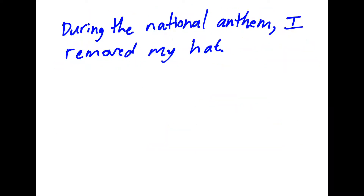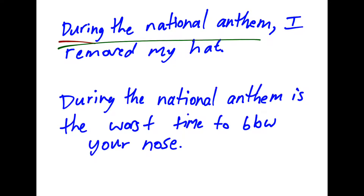In a sentence like 'During the national anthem, I removed my hat,' we see the preposition 'during,' the object 'anthem,' and the whole phrase 'during the national anthem' tells you when you removed your hat. But what if the sentence changed and said 'During the national anthem is the worst time to blow your nose'? In this instance, which is pretty rare, the prepositional phrase actually functions as the subject of the sentence, so it's functioning like a noun phrase.